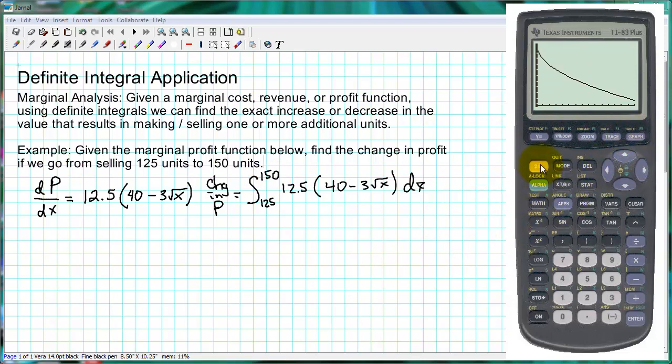Now to integrate, remember we do 2nd and we get the calculation menu which is on top of trace. And we're doing item 7 here. And we need to input our lower bound which was 125, and our upper limit which is 150. And we get $1,510.